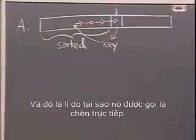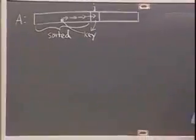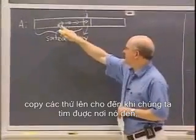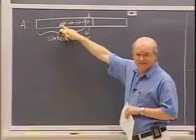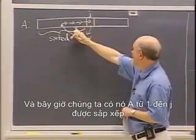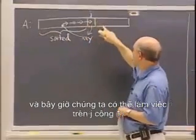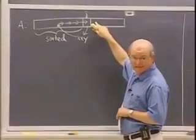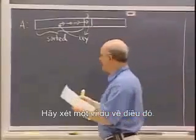We keep copying values up until we find the place where the key goes, then we insert it — that's why it's called insertion sort. Now we have A from 1 to j sorted, and we can work on j plus one.